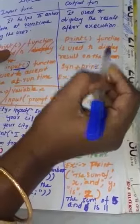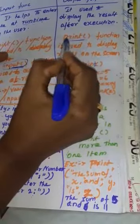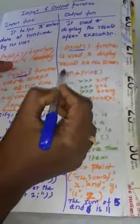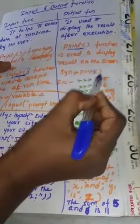Next, print function is used to display the result on the screen. In output function, using what? Using the function name what? Print. This is the function name. Print function is used to display the result on the screen. Next, syntax. Syntax means general format print bracket.